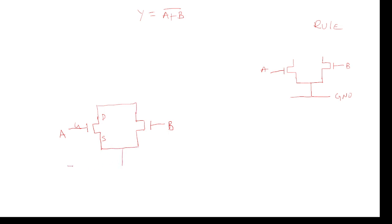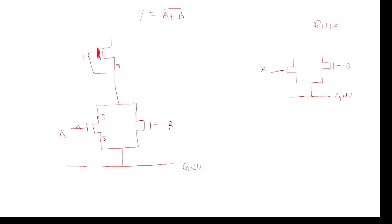Assuming source, gate, drain for each transistor — similarly source, gate, drain — this is the pull-down network. Ground is required, and we need to draw the ground. Coming to the pull-up network, only NMOS transistors should be used here because it is NMOS technology. We need to get the output, and all transistors must be NMOS.